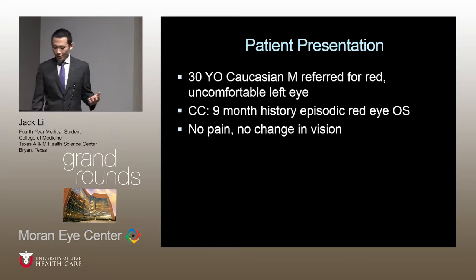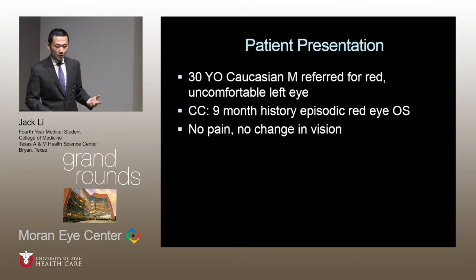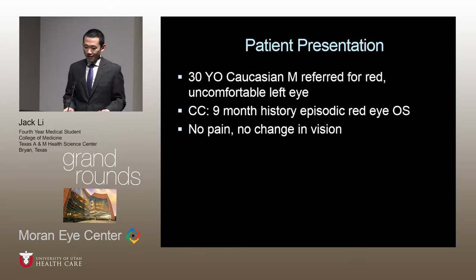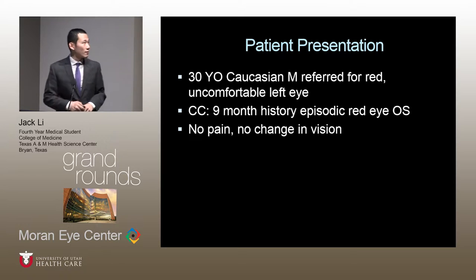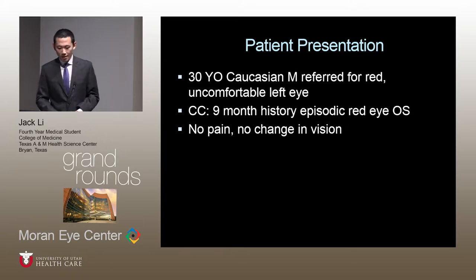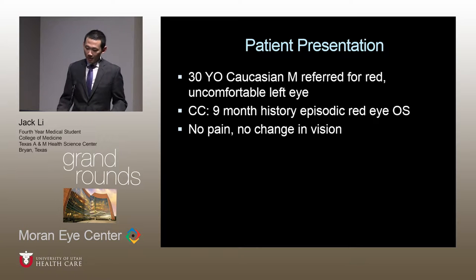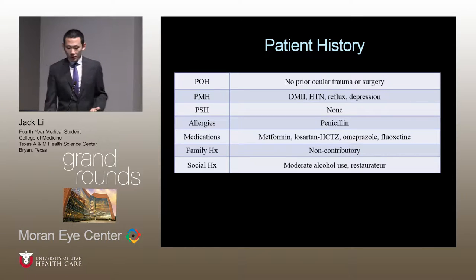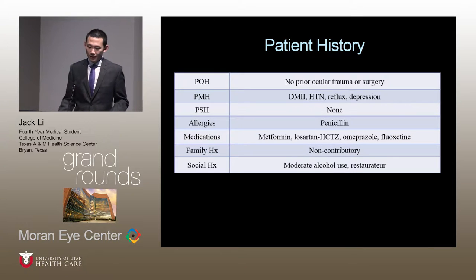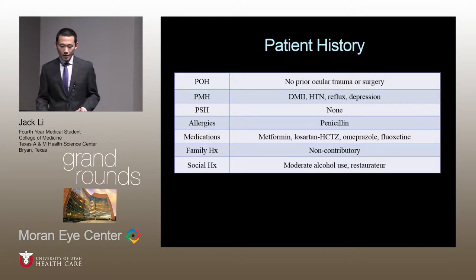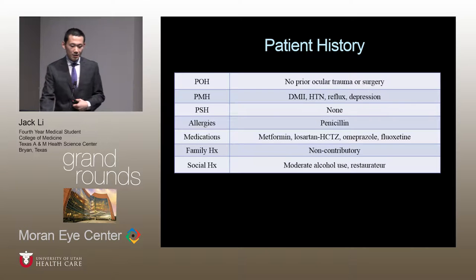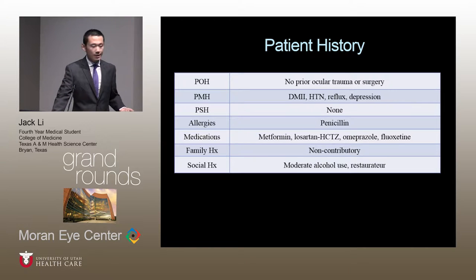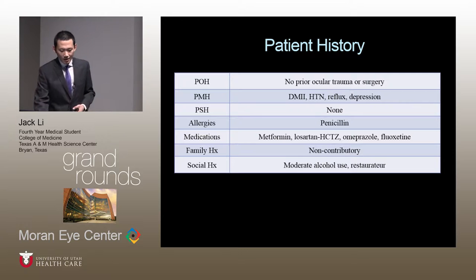We have a 30-year-old Caucasian male who was referred for a red and uncomfortable left eye. This has been going on for about nine months, and when we saw him he did not complain of any pain or changes in vision. He did not have any ocular history, trauma, or surgery. His past medical history includes diabetes, hypertension, reflux, and depression. His allergies and medications are listed.